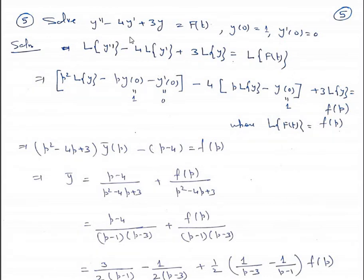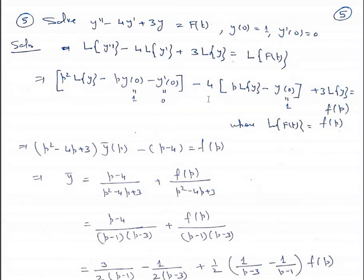Let's take a class example. Solve y'' - 4y' + 3y = f(t), with y(0) = 1 and y'(0) = 0. Take Laplace transform: L{y''} - 4·L{y'} + 3·L{y} = L{f(t)} = F(p). Applying the formula: p²·L{y} - p·y(0) - y'(0) - 4[p·L{y} - y(0)] + 3·L{y} = F(p).